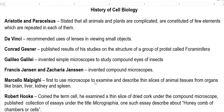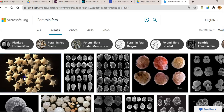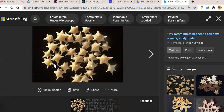The next one is Conrad Gessner. Conrad Gessner published results of his studies mainly related to cell structure, especially related to the protozoa. These protozoa belong to the group called foraminifera. So protozoa cell structure was first denoted or explained by Conrad Gessner. The foraminifera on which Conrad Gessner worked — this is the structure of that foraminifera.